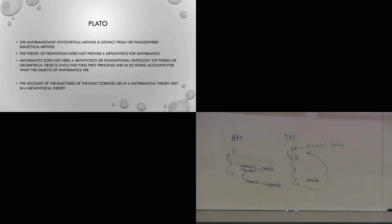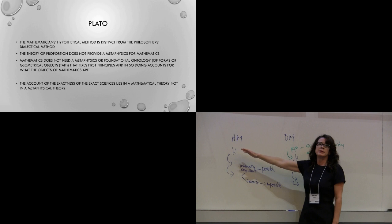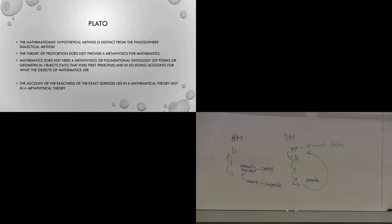My project for Plato, at the very least, has been to show that Plato nowhere says that the hypothetical method or the dialectical method must be undertaken by the mathematician. What we get then is that the account of the exactness of the exact sciences lies in a mathematical theory — a theory of proportion — not in a metaphysical theory. And it rests in a mathematical theory because our method is in some sense hypothetical, not dialectic, and does not require fixity.